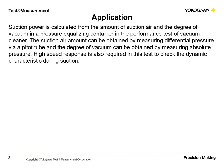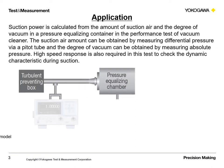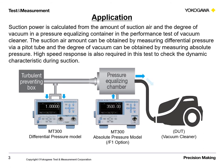Suction power is calculated from the amount of suction air and the degree of vacuum in a pressure-equalizing container in the performance test of a vacuum cleaner. The suction air amount can be obtained by measuring differential pressure via a pitot tube, and the degree of vacuum can be obtained by measuring absolute pressure. High-speed response is also required in this test to check the dynamic characteristic during suction.